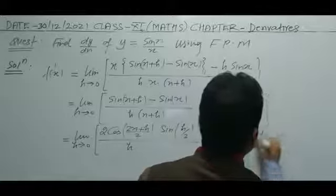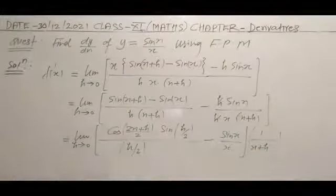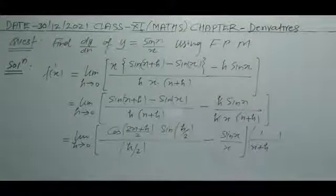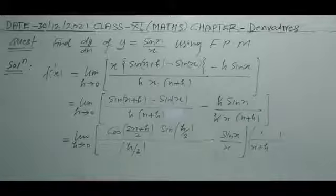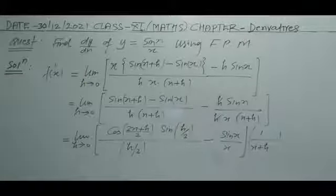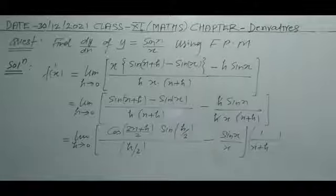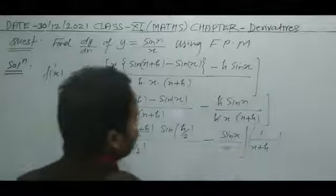Closing the bracket, 1 upon (x plus h). When we operate the limit, this result becomes 1 and this gives cos(x). So we get cos(x) upon x. And this result will be 1, giving minus sin(x) upon x squared when the limit h tends to 0 is applied.